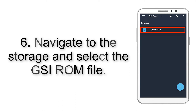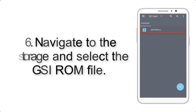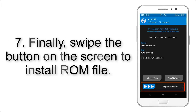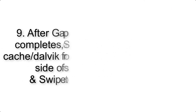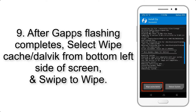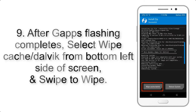Step 5: Go back to the recovery main screen and tap on the Install button. Step 6: Navigate to the storage and select the GSI ROM file. Step 7: Swipe the button on the screen to install the ROM file. Step 9: After GApps flashing completes, select Wipe Cache and Dalvik from the bottom left side of the screen and swipe to wipe.